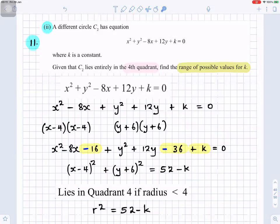Now we want to complete the square for x squared minus 8x and y squared plus 12y. So half of 8 is 4. So I have x minus 4, x minus 4, which will give x squared minus 8x minus 16. And half of 12 is 6. So when we multiply that, we'll get y squared plus 12y plus 36, which comes from 6 times 6. And that minus 16 will come from the 4 times 4. Plus k equals 0.